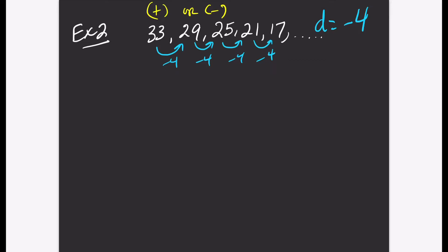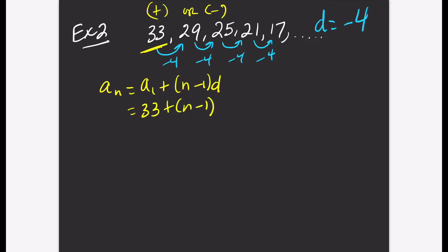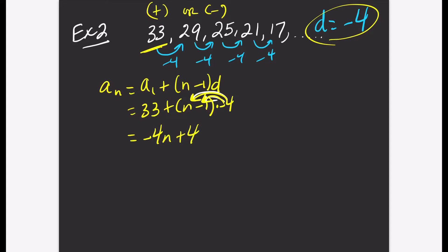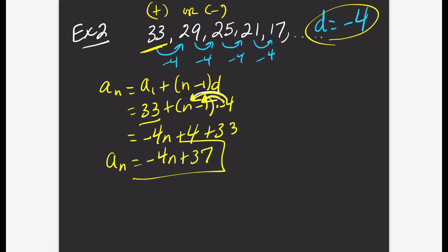Let's find the explicit rule for this problem. A sub n is equal to a sub 1 plus the quantity n minus 1 times the difference. A sub 1 is 33, and d is negative 4. Let's simplify: distribute the negative 4 — negative 4 times n is negative 4n, negative 4 times negative 1 is plus 4 — bring down the 33. Combine like terms and here is the explicit rule: a sub n equals negative 4n plus 37.